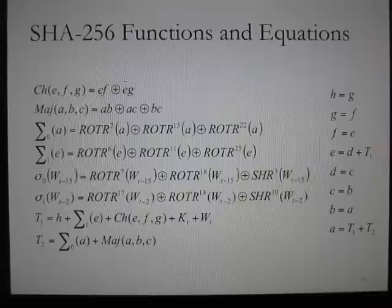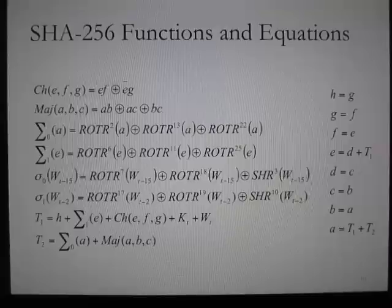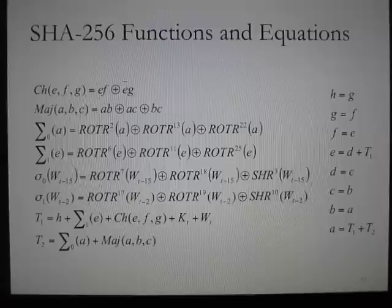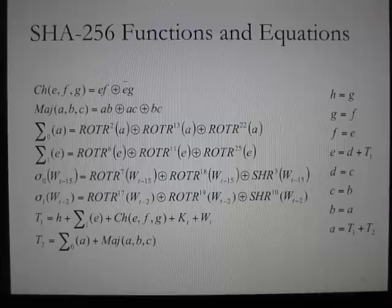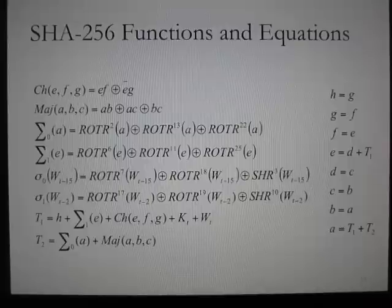The parameters used are A to H, which are 32-bit words used in the computation of the hash values; KT, the constant values used for the iteration; and WT, which is the message schedule. The symbols and operations used include bitwise AND, XOR, complement, addition modulo 2^32, circular rotate right, and right shift operations.